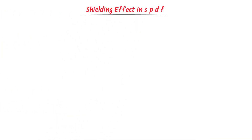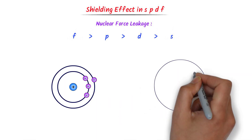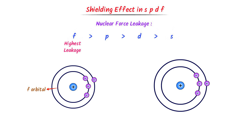Now let me teach you shielding effect and SPDF orbitals. The order of shielding effect has S orbital with the highest and F orbital with the lowest. I teach this using the concept of nuclear force leakage. The nuclear force leakage of the F orbital is maximum, so nuclear force leaks through F orbital and the outer electron receives a strong pull. As a result, atomic radius decreases — the more the nuclear force leakage, the smaller is the ionic radius.